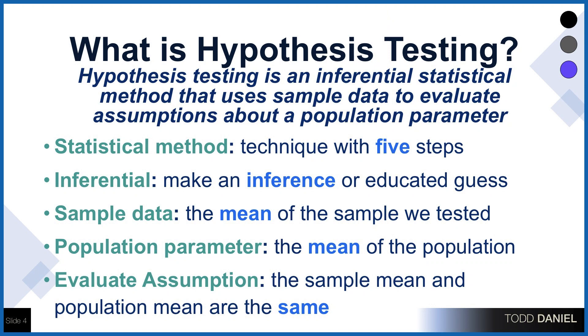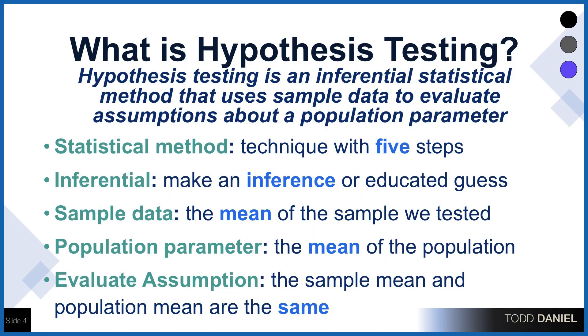This is a statistical technique we use to make an inference — an educated guess. An inference means: here's what we think is most likely to occur, or what the probability suggests is the most likely outcome. We use sample data, specifically the mean of the sample, to evaluate assumptions about a population parameter — the mean of the population. We evaluate whether the sample mean and the population mean are the same.